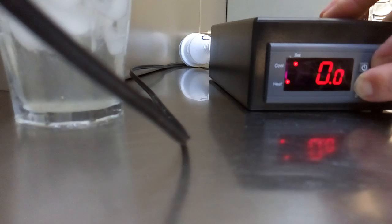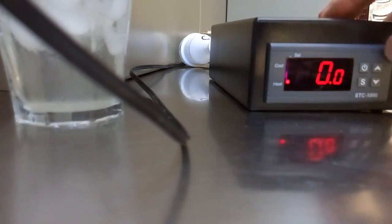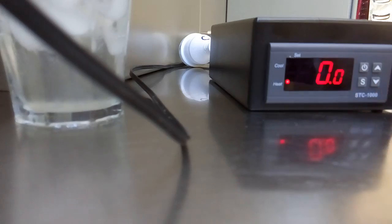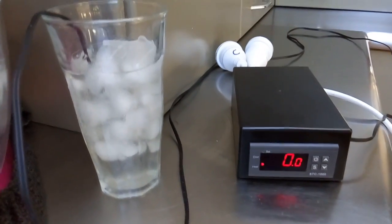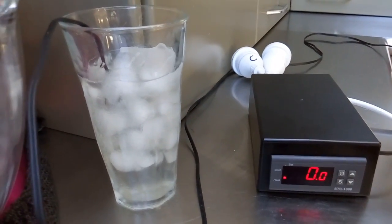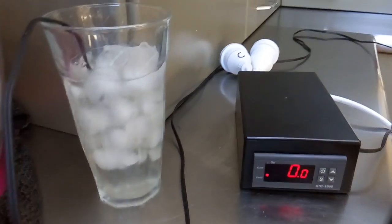Adjust it by how much you're out. So in this case I'm out by 0.1, hit the set button, and you can see now it's showing 0.0. So now I know that my STC is bang on.